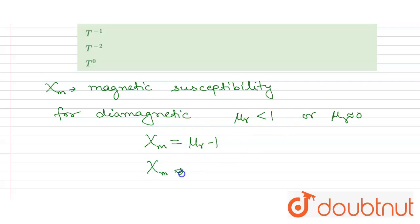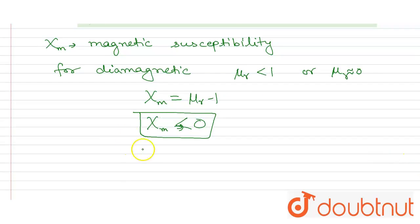χm will be equal to or less than zero. So χm will be less than zero, or we can say the magnetic susceptibility χm is independent of temperature.